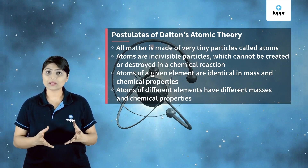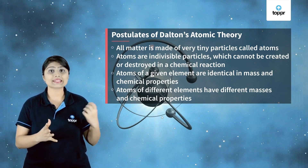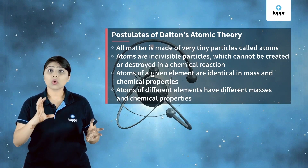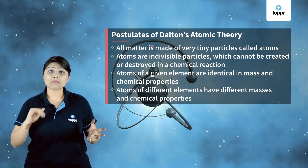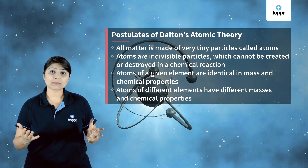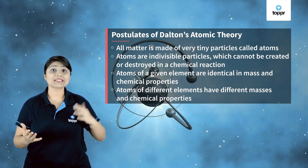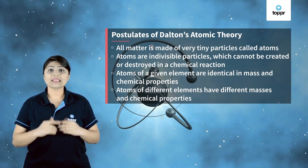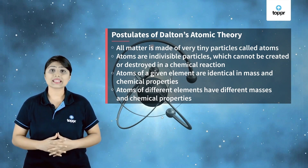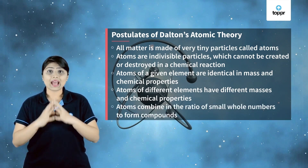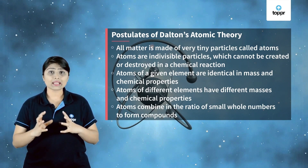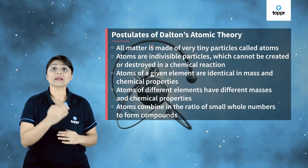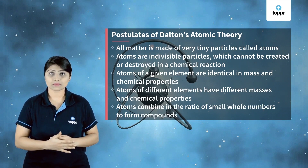For example, if we have gold and silver, both are made up of atoms. The gold atoms will have different mass and chemical properties than the silver atoms. Atoms combine in the ratio of small whole numbers to form compounds.